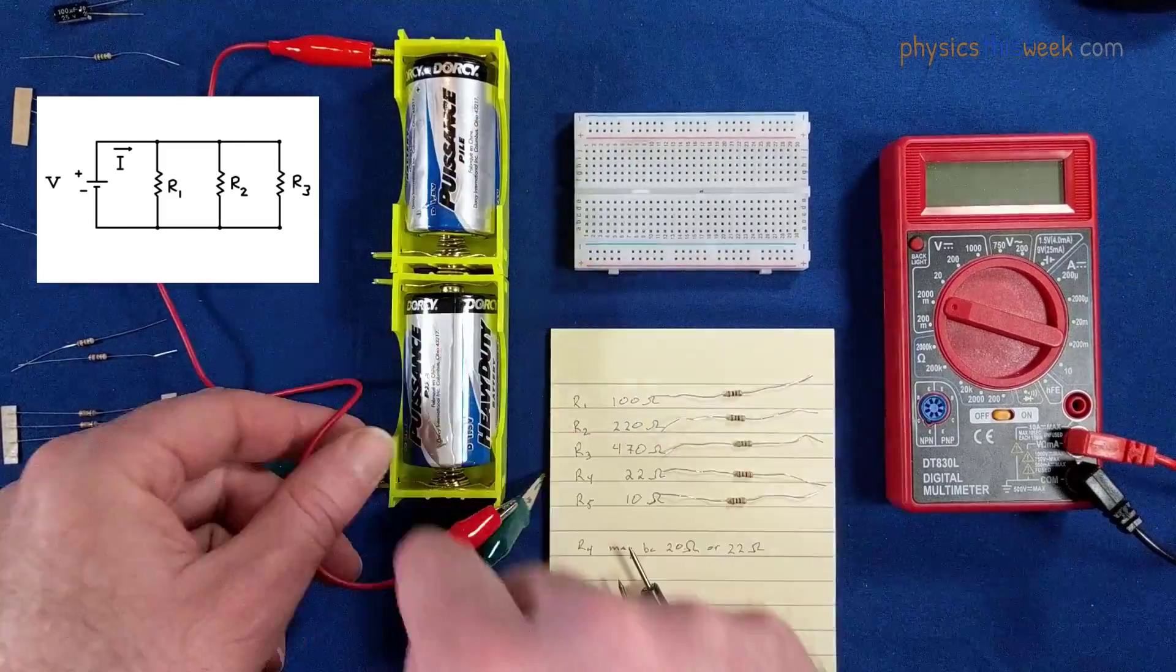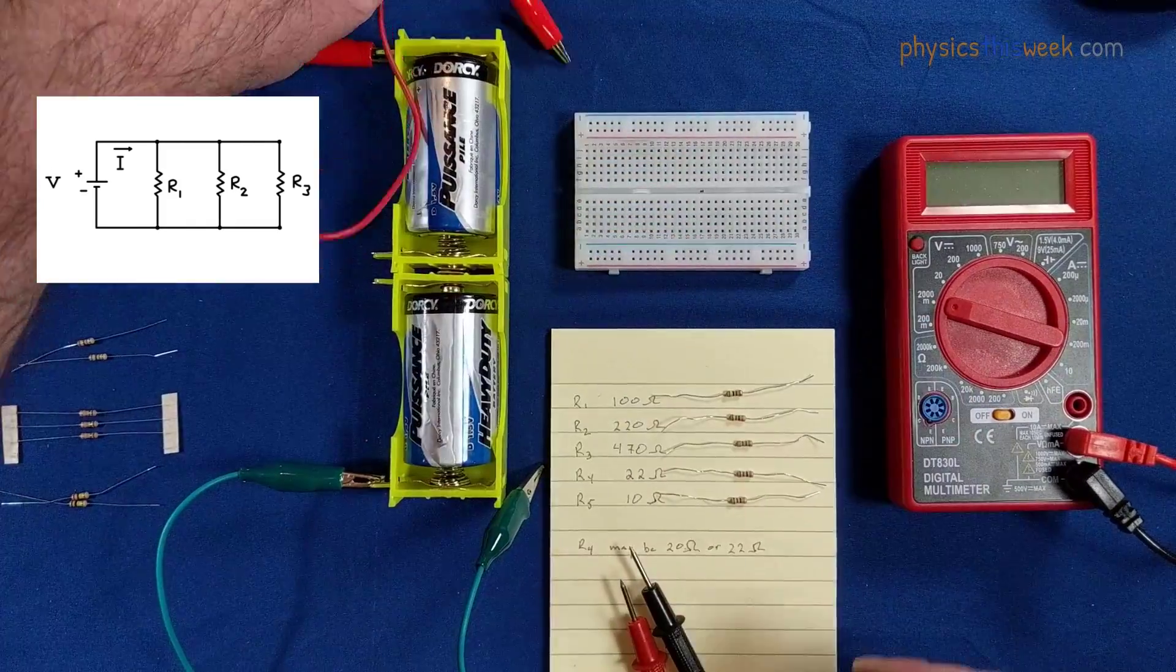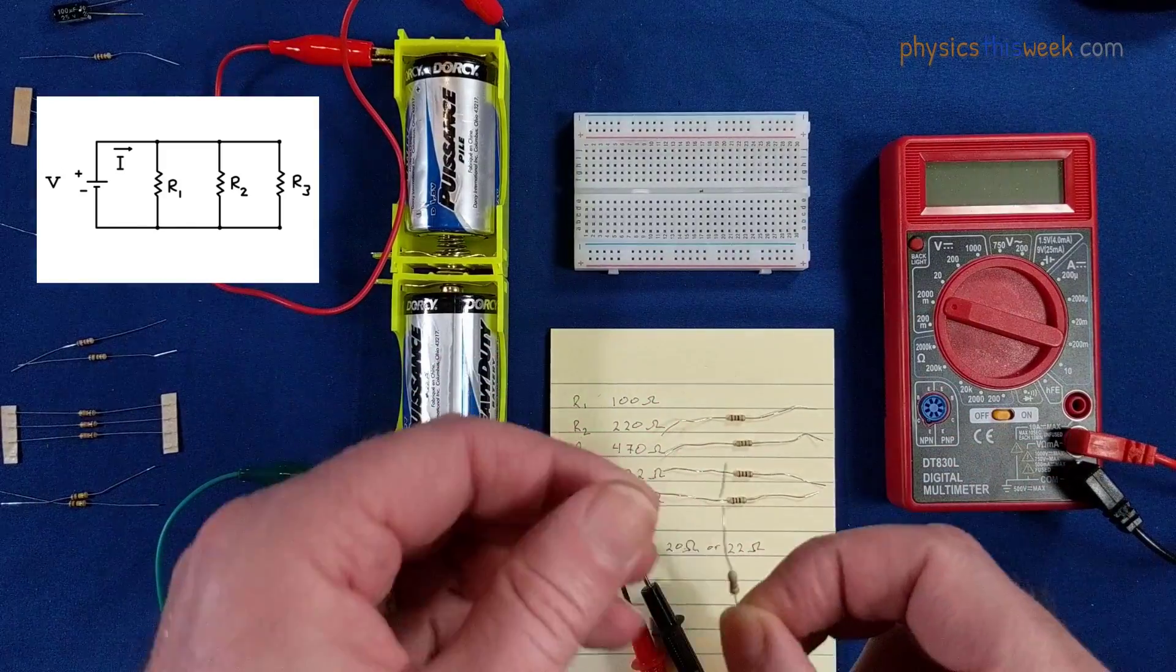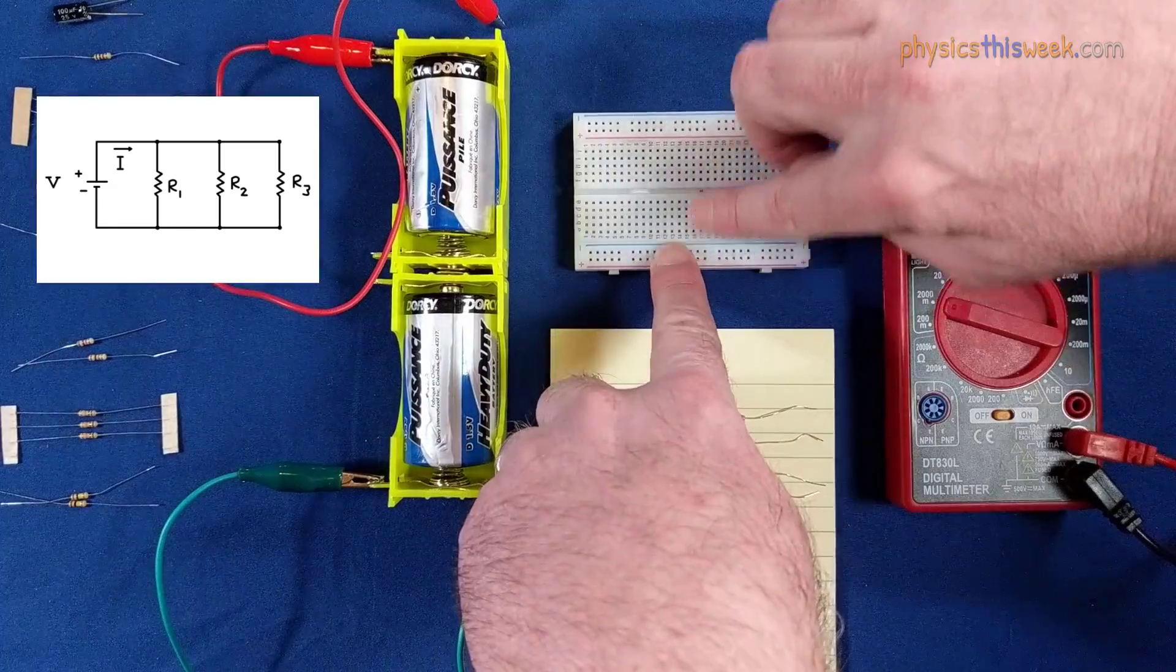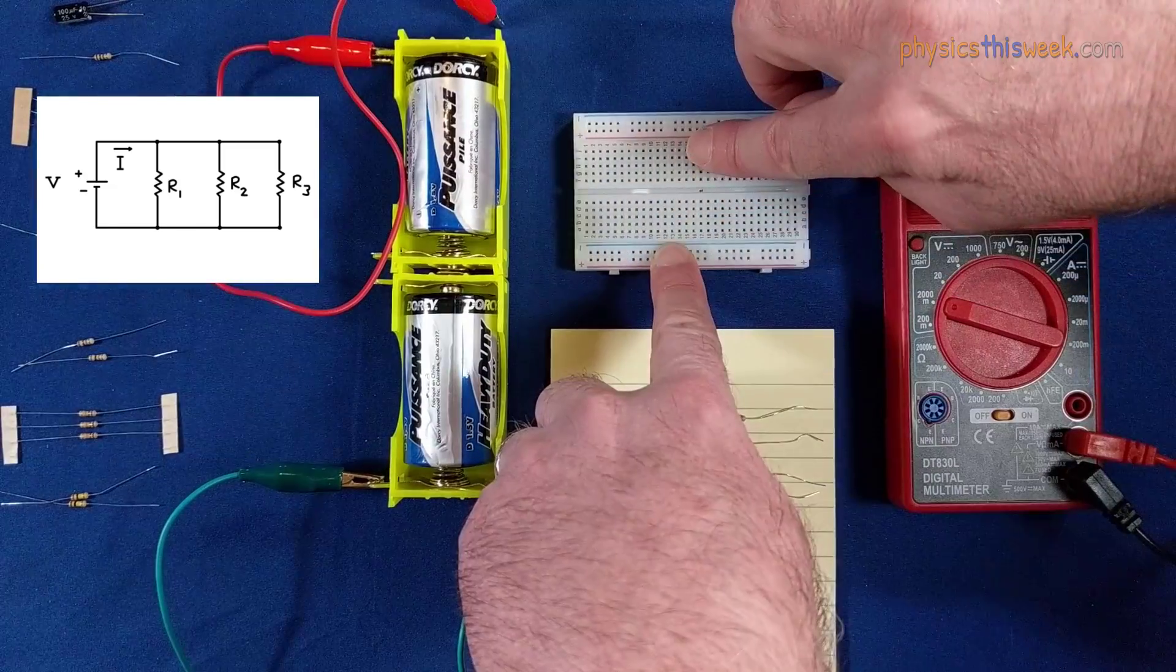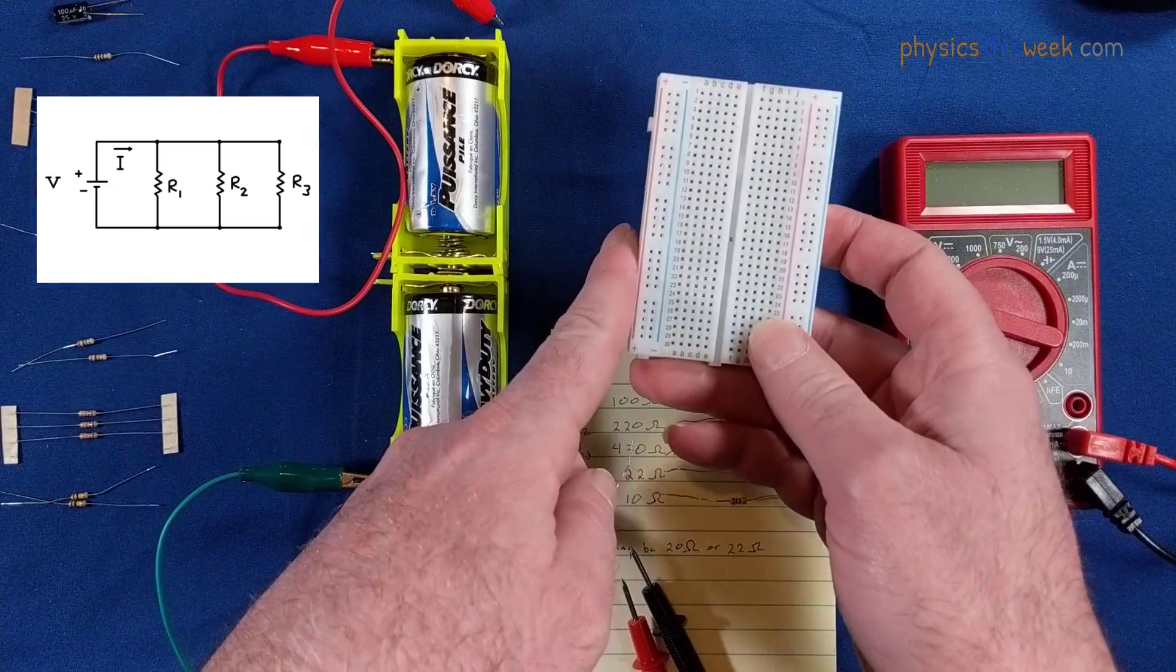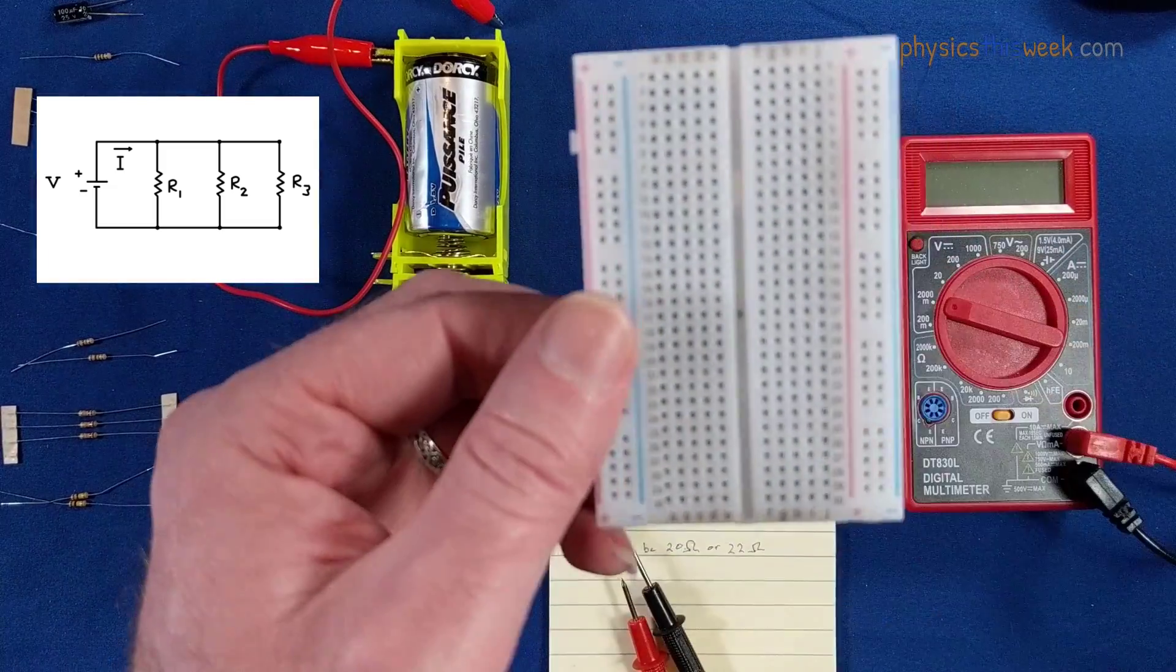I'm going to take resistor one, I'm going to pop it in. These are measured as numbers this direction, and depending on how this is set up, you see the numbers on there.